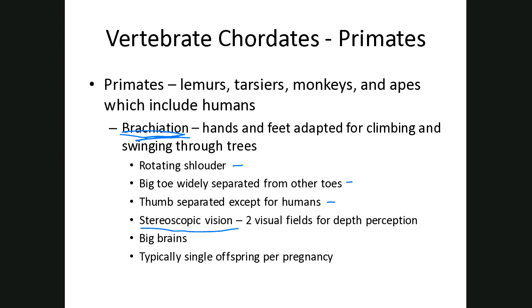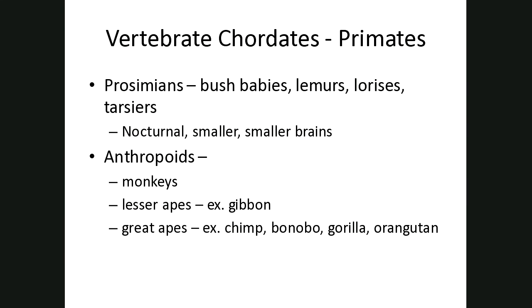Primates have the biggest brains, and another interesting characteristic is that typically they have a single baby per pregnancy. Primates are broken up into two groups: the prosimians and the anthropoids. Prosimians include the smaller, smaller-brained primates — bush babies, lemurs, lorises, and tarsiers — and they're usually nocturnal. The anthropoids include monkeys, the lesser apes like gibbons, and then the great apes, which include the chimp, the bonobo, the gorilla, and the orangutan.